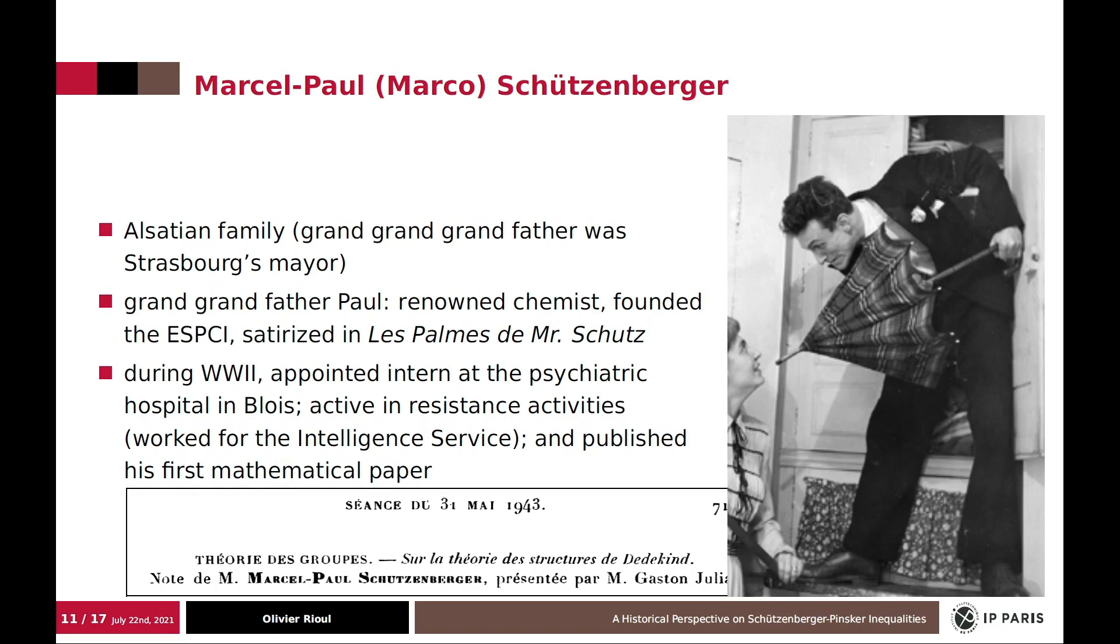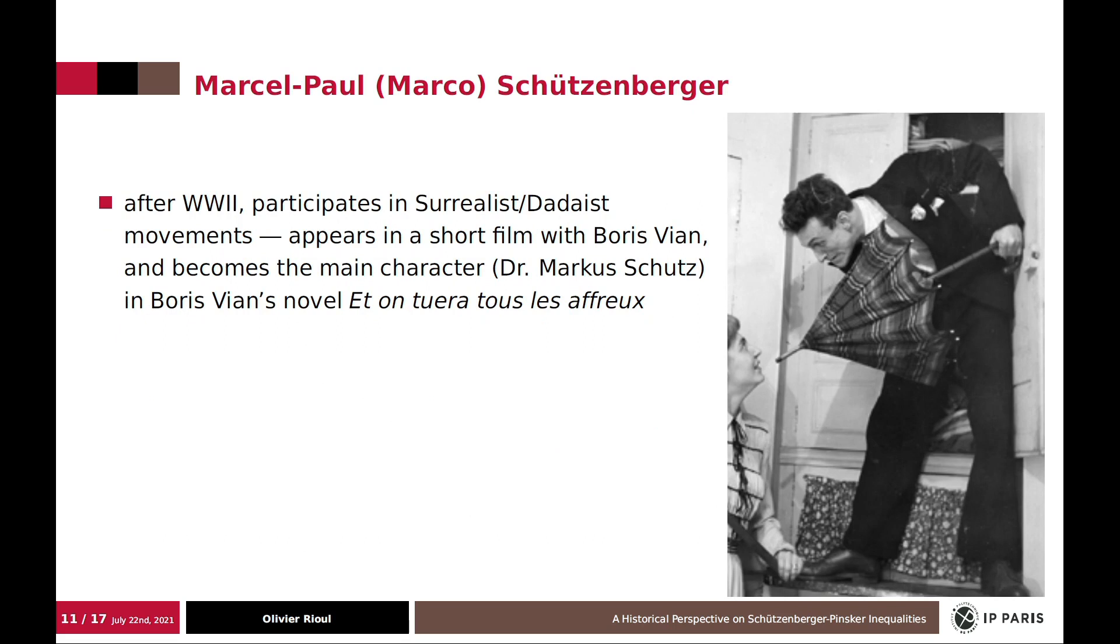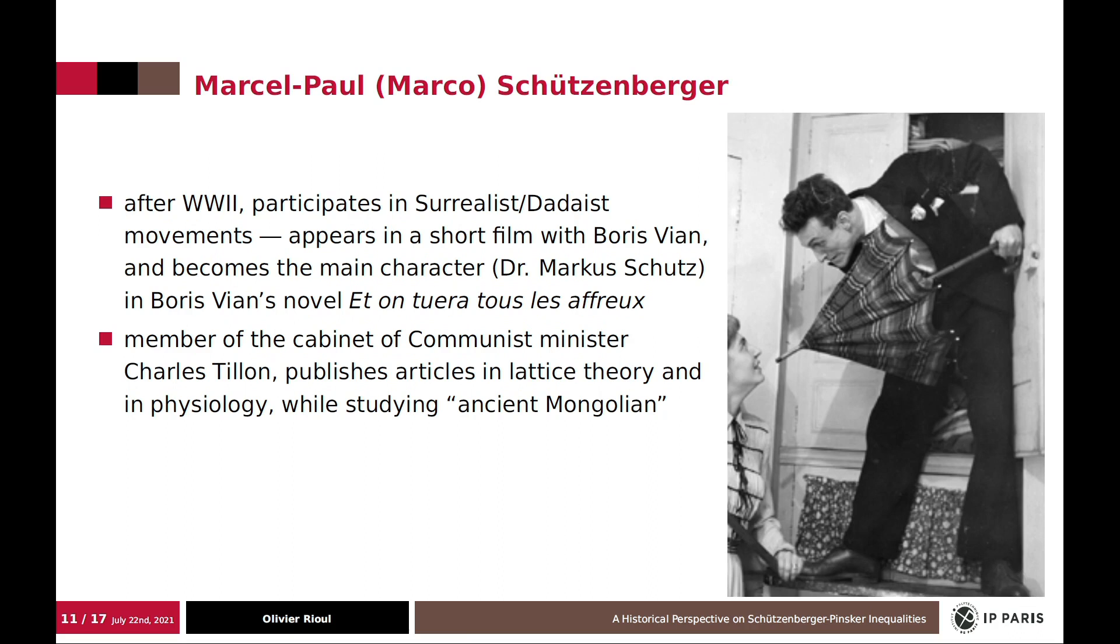So Marcel Paul, during World War II, he was interned in a psychiatric hospital. He was active in resistance activities where he worked for the intelligence service. And he also published his first mathematical paper in 1943 on group theory. And then, just after World War II, he is known to participate in some Dadaist movements with Boris Vian. He was also the main character in a well-known novel of Boris Vian, which is a well-known French writer, as Dr. Marcus Schützenberger. And he was also a member of communist minister Charles Tillon.